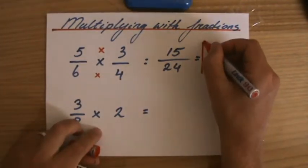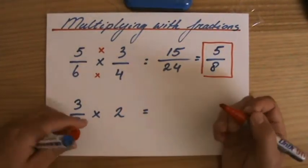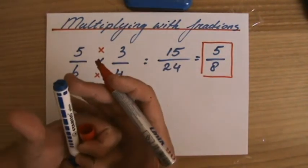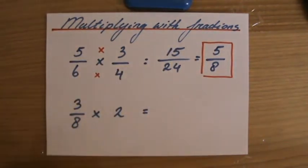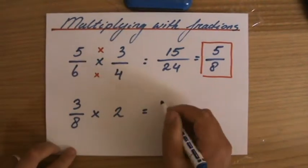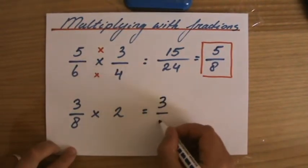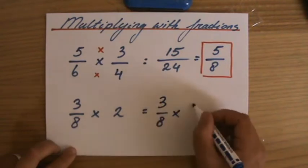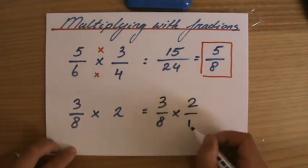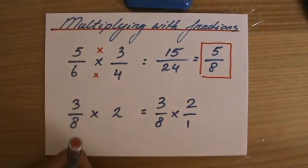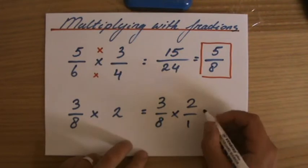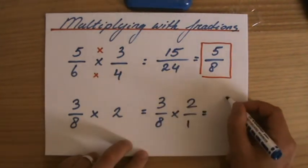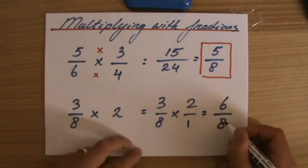So don't get overexcited when you're multiplying fractions — still make sure that you simplify your final answer. Next example: 3 over 8 times 2. I'd rather always write that whole number as a fraction because I know I'm multiplying numerators and denominators with each other. So I have 3 over 8 times 2 over 1. 3 times 2 is 6 and 8 times 1 is 8.